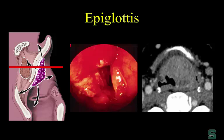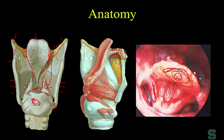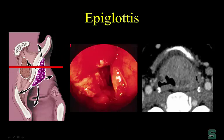The epiglottis is an anterior and midline structure. At endoscopy, the surgeons can see an aggressive lesion involving the anterior and midline portion of the larynx — that's a primary epiglottic carcinoma. On imaging, notice how the center of this mass is anterior and midline. So when we see a lesion that's anterior and midline, it has to be involving the epiglottis.